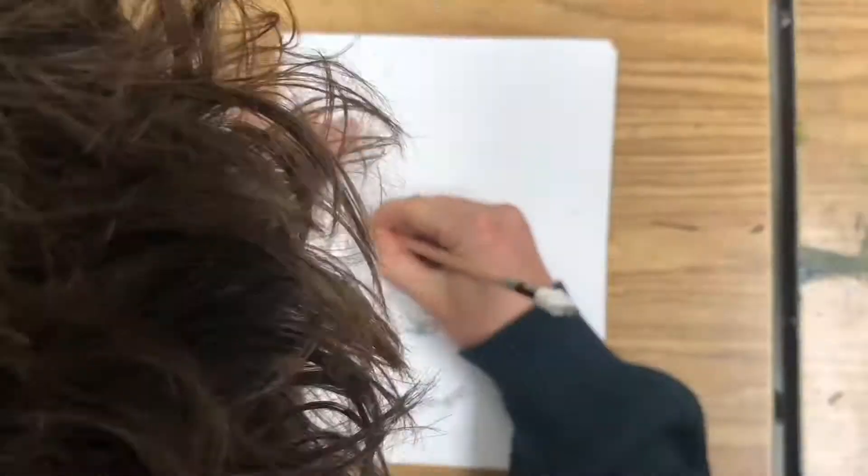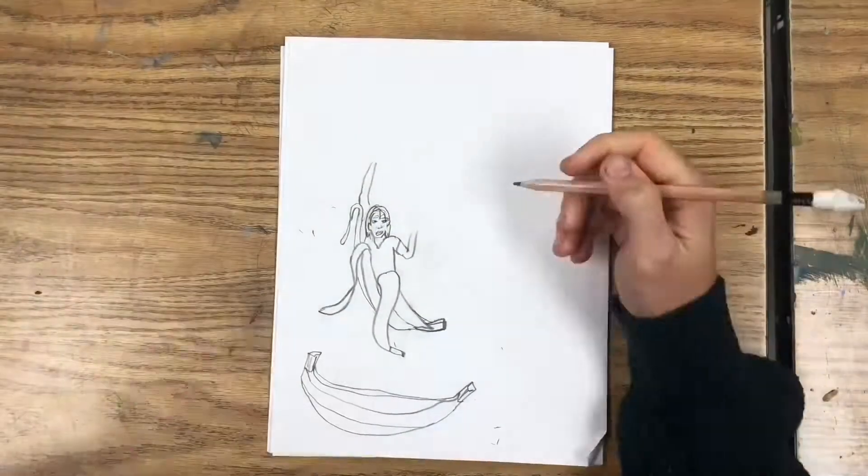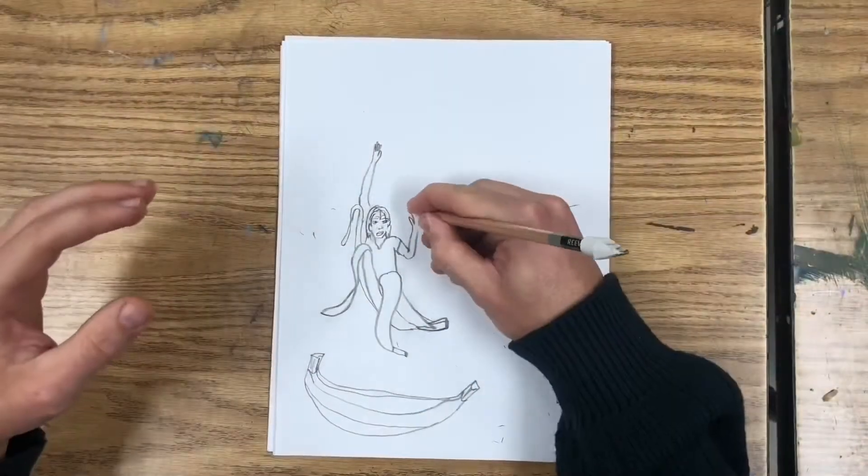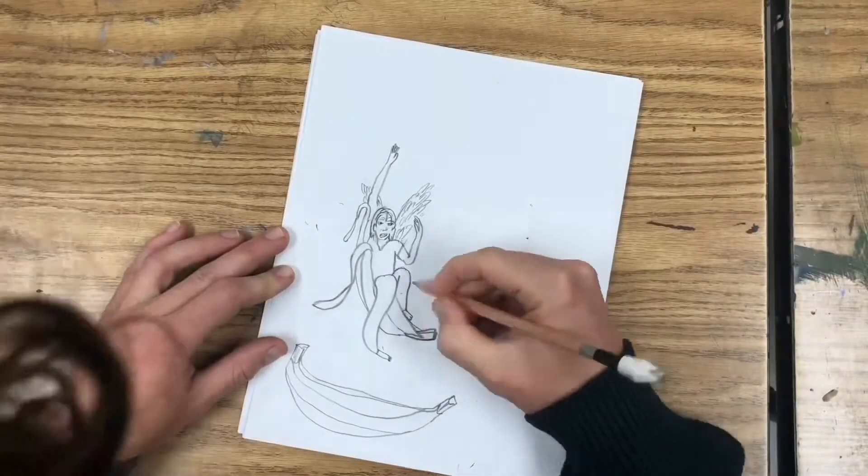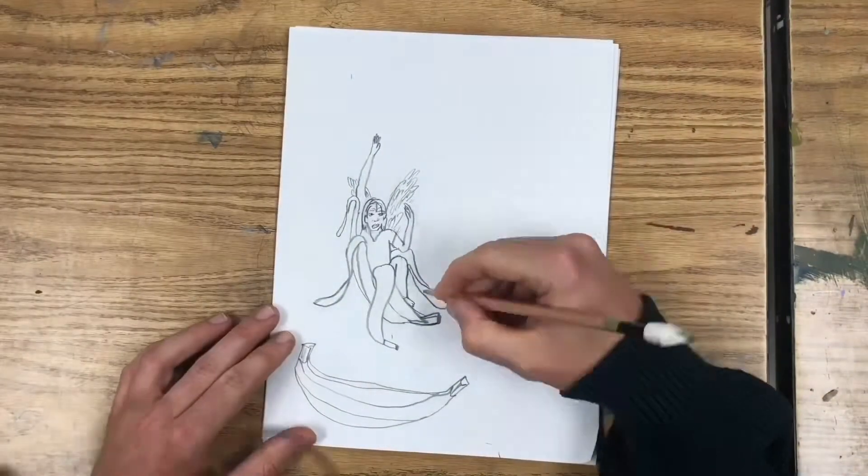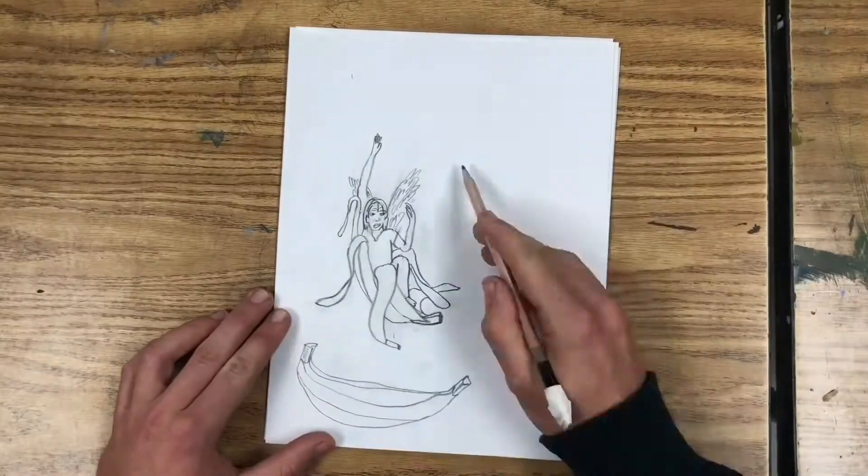Something could be flying out of it. Now the obvious thing there would be a bird, but I thought what if it was a fairy or angel flying out of that window? And then where did the fairy or the angel come from? I decided to have the fairy angel emerge from a banana peel. Now I've got an idea that I'm excited about.